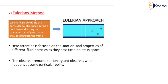The second approach is the Eulerian approach. In this method, we fix our frame at a particular point or section in space during a fluid flow, and note the characteristics of particles as they pass through the frame. At any point or section, we put a frame and observe what happens — what particles are moving and what are their characteristics like velocity and acceleration.